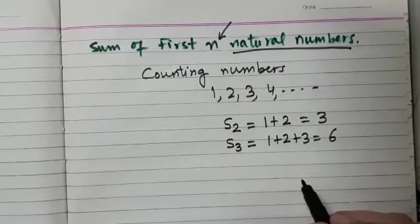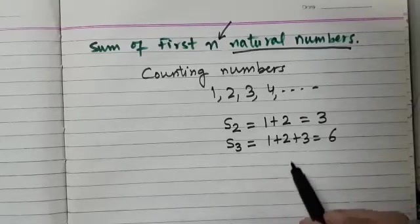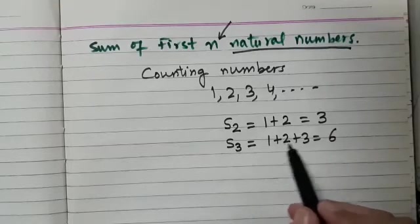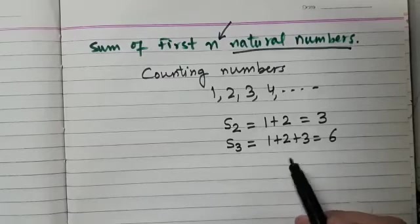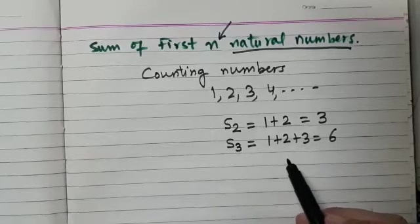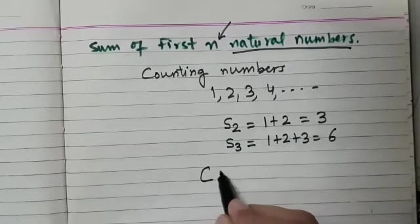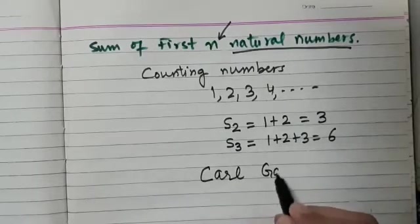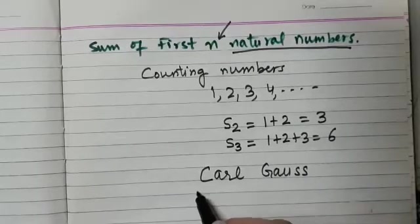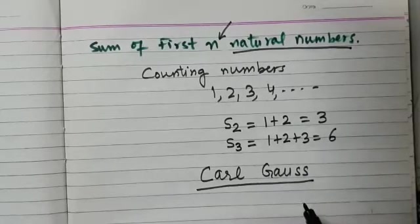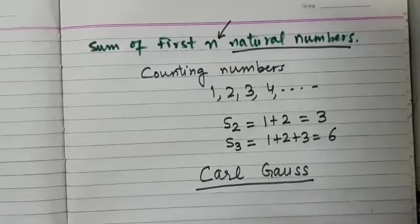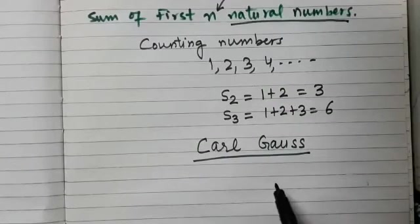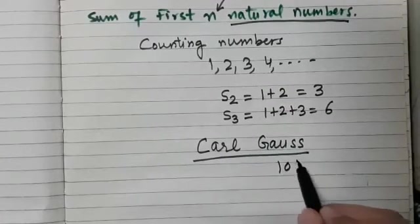But what if we increase the number of terms? Here you see we have 3 terms to be added. Now I am going to share with you an interesting story. Just read this name and you can read about him on the internet also. Carl Gauss. Carl Gauss was a famous mathematician.